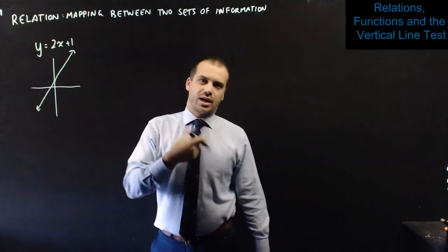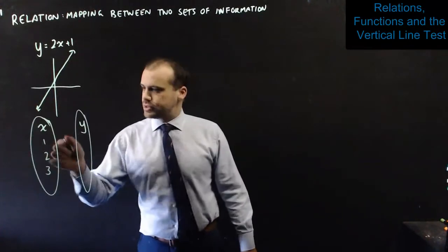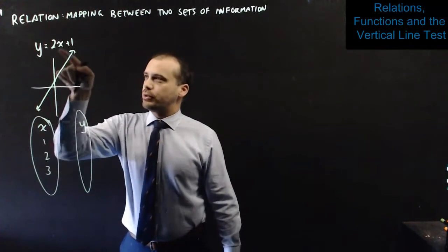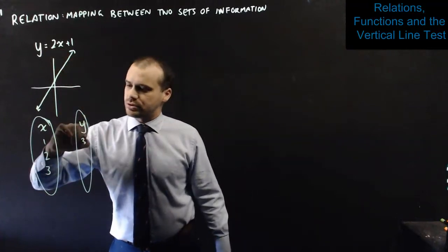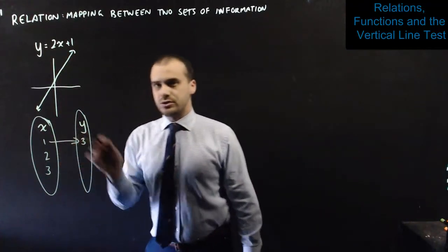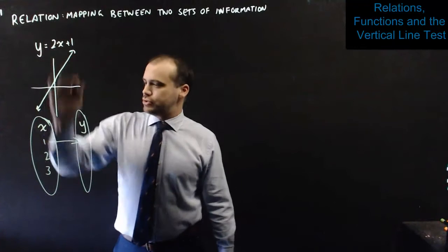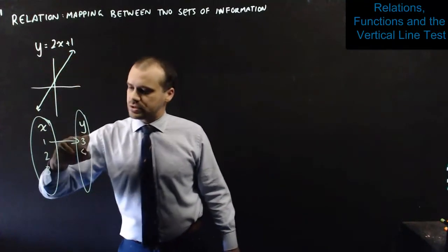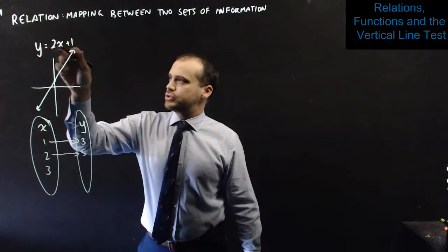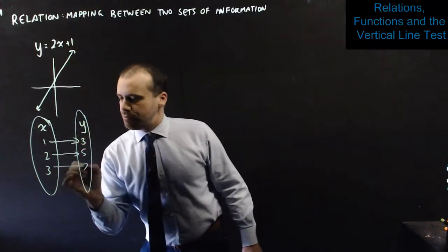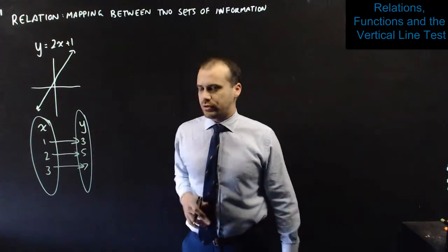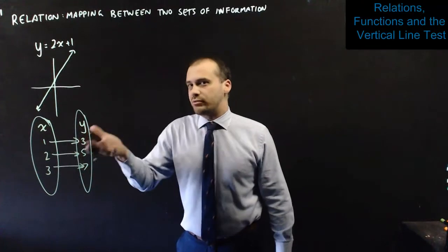I can show this using what's called an arrow diagram. For instance, if x equals 1, 2 times 1 plus 1 is 3, and I map it using my arrow diagram. 2 times 2 is 4 plus 1 is 5. I map it using my arrow diagram. 2 times 3 plus 1 is 7. I map it using my arrow diagram. This is called a one-to-one relation.